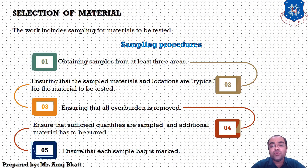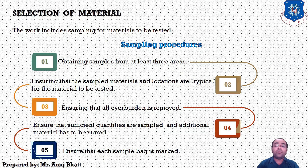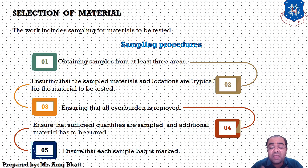All construction materials to be used in the permanent works are to be sampled jointly by the consultant and contractor prior to the commencement of the work. This includes sampling of materials to be tested for proposing the approval of the material source, as well as sampling for approval of the individual construction material. The contractor must give notification of a request for sampling to the consultant in advance. All sampling is to be carried out in accordance with instructions given by the consultant, following recognized guidelines of good engineering practices.